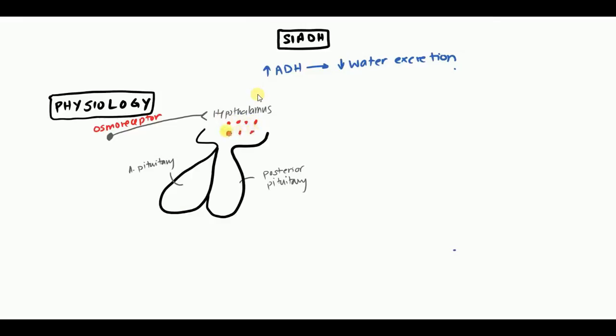These little red dots represent ADH. It gets produced in the hypothalamus and gets stored in the posterior pituitary. It accumulates here in the posterior pituitary, and then from here, when it's needed, it gets released.